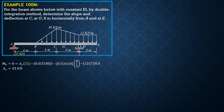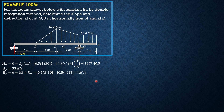Then let's solve for Rd by summing vertical forces equal to zero: 33 plus Rd minus 0.5 of 3 times 30, minus 0.5 of 4 times 18, minus 12 times 7 equals zero. So Rd equals 132 kilonewtons.